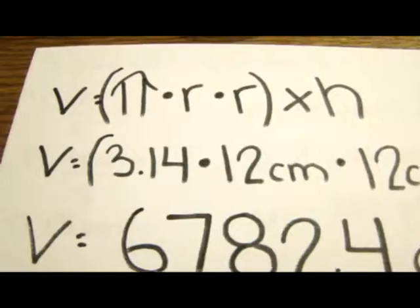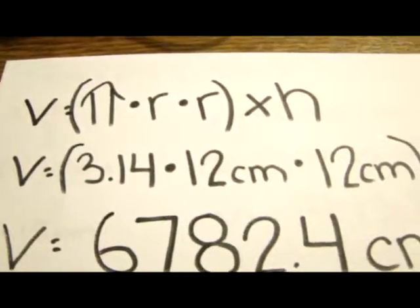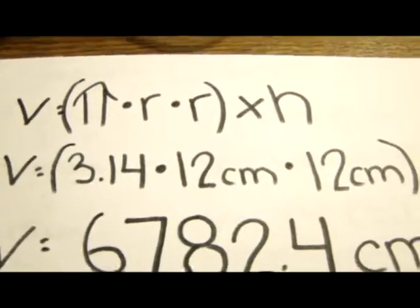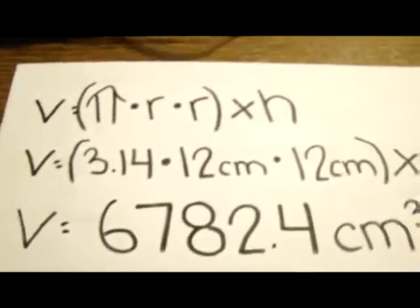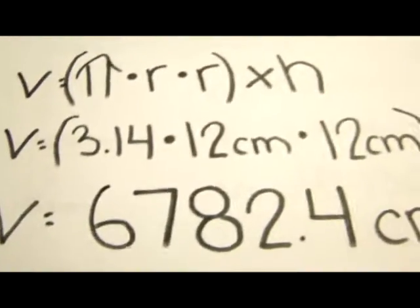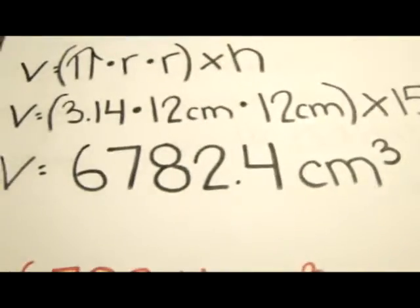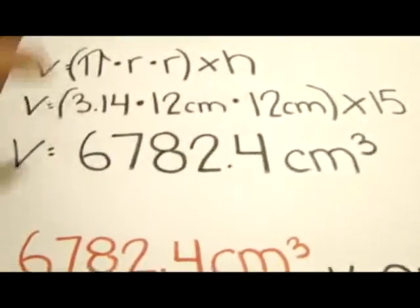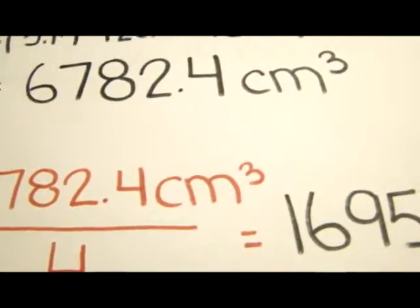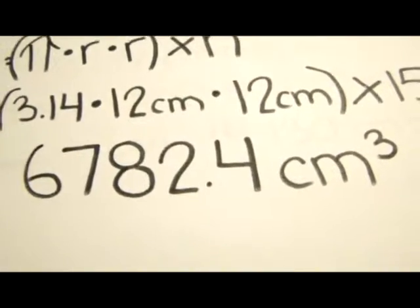For the next question, I did pi times r times r times height, or pi r squared times height. Then I did 3.14 times 12 times 12 times 15. So I calculated all of that to get 6,782.4 cubic centimeters.